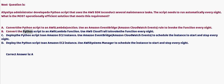Option B: Convert the Python script to an AWS Lambda function and use AWS CloudTrail to invoke the function every night. Option C: Deploy the Python script to an Amazon EC2 instance and use Amazon EventBridge (CloudWatch Events) to schedule the instance to start and stop every night.